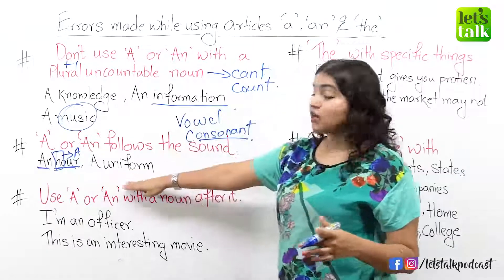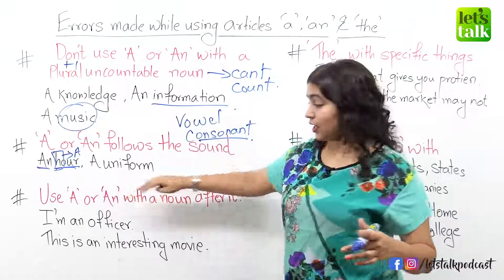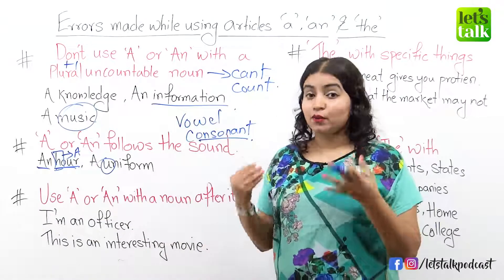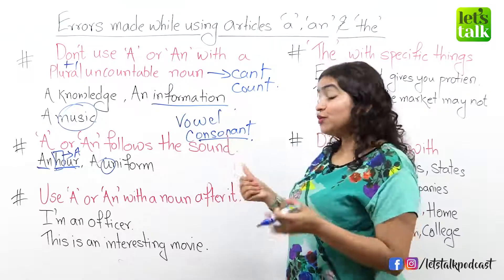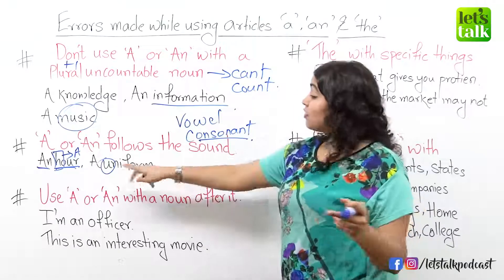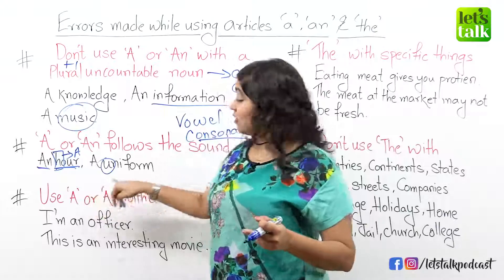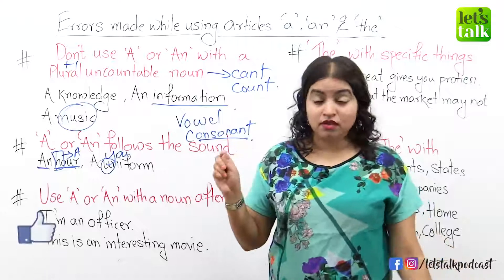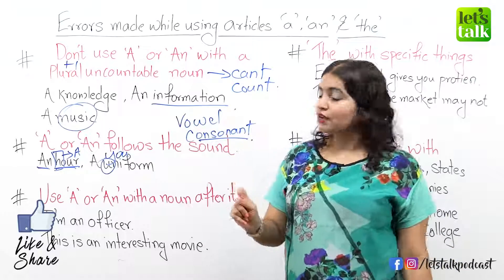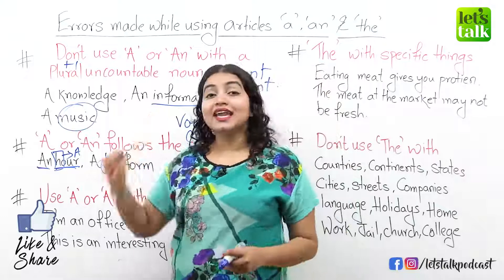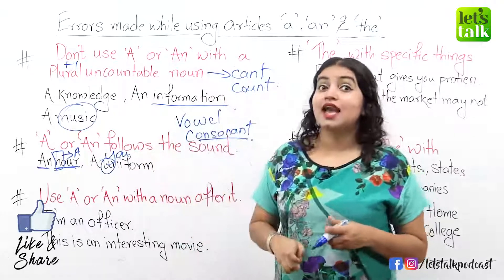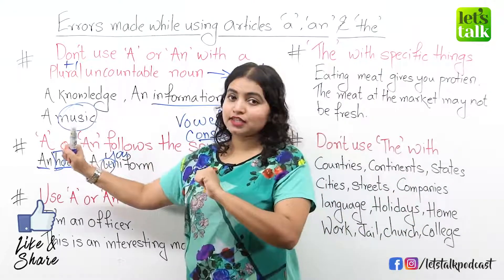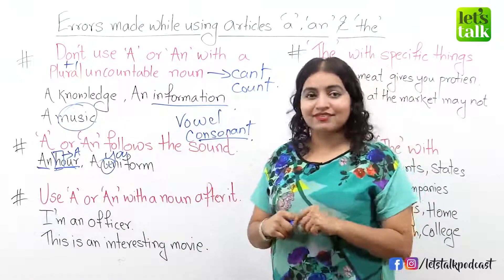On the other hand, take the word uniform. We know that u is a vowel, and we learned to use an before a vowel, but the word uniform has the u which actually gives the y sound, and y is a consonant, which is why you always say a uniform. You will never say an uniform. That's the second rule to avoid making errors while using a and an.